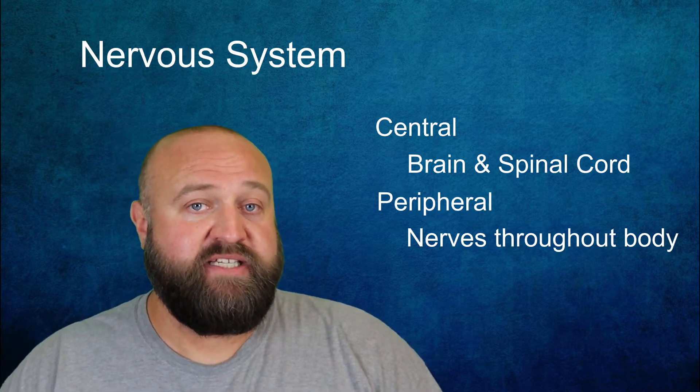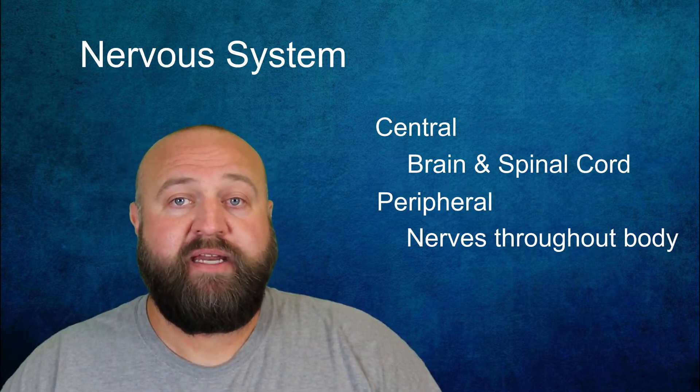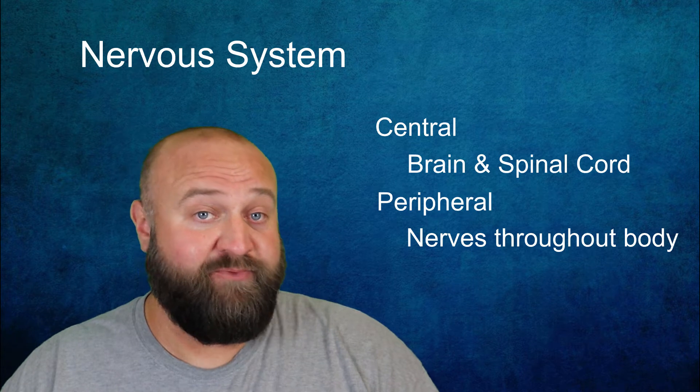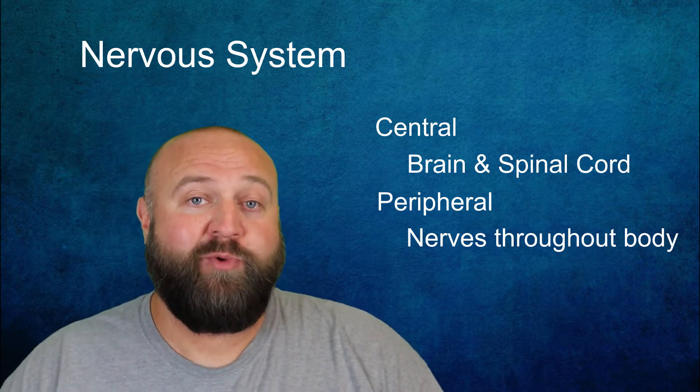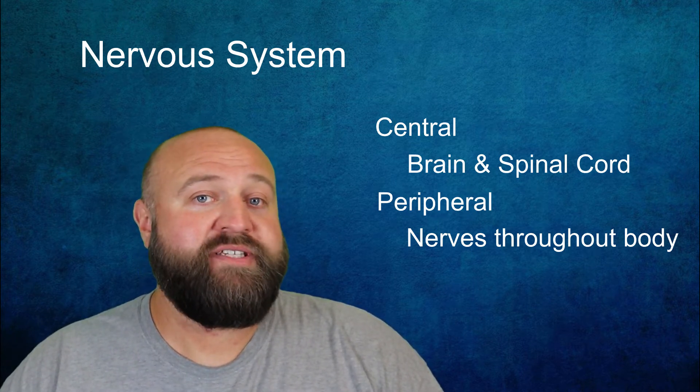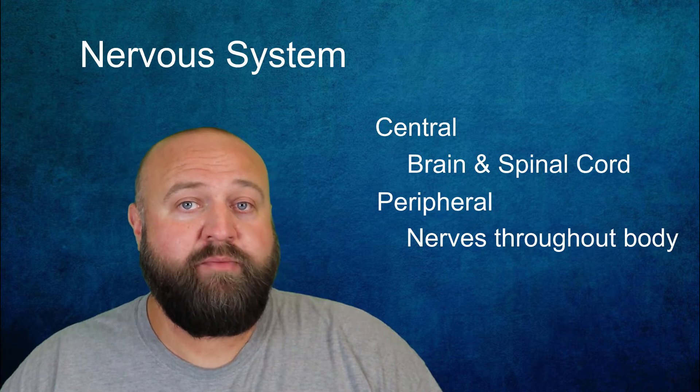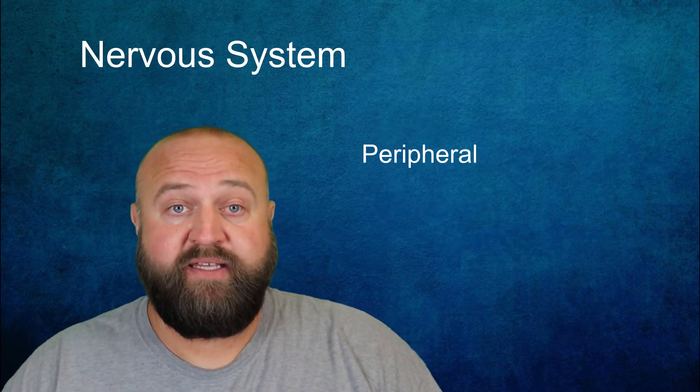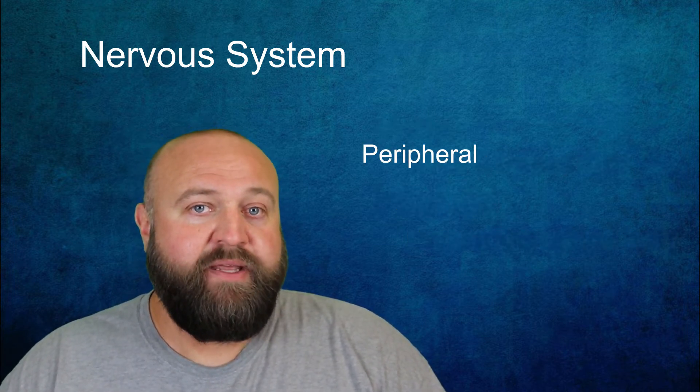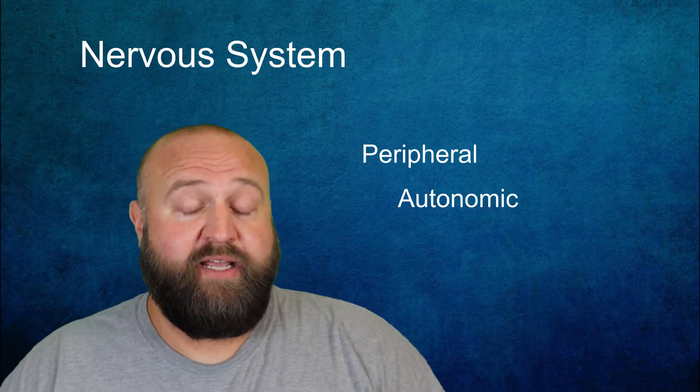These include sensory cells that are responsible for us being able to see, smell, taste, feel pain or heat and so much more. The central nervous system is not subdivided anymore but the peripheral nervous system is. It's divided up into the autonomic and the somatic nervous systems.